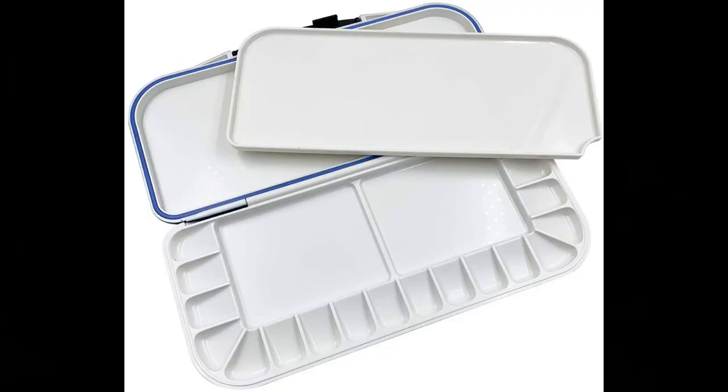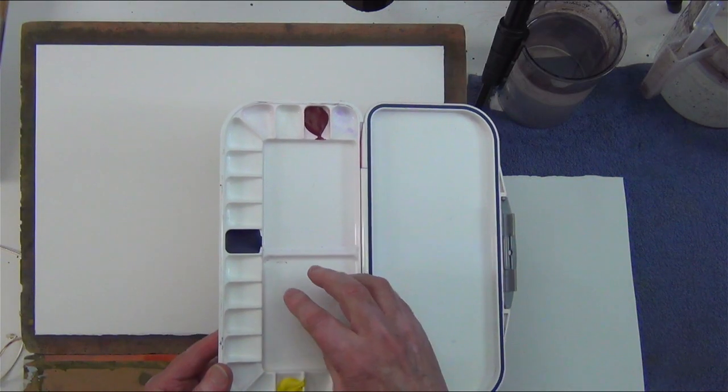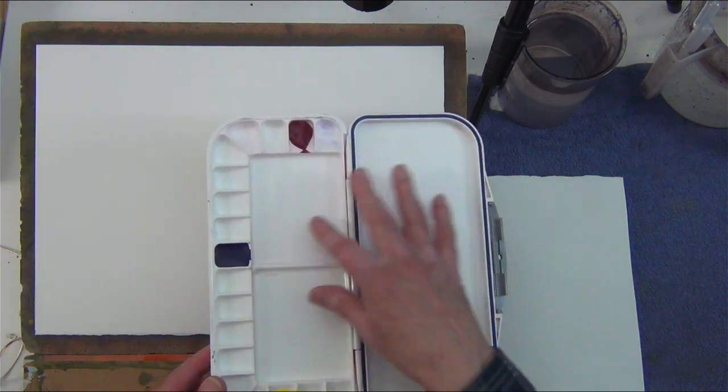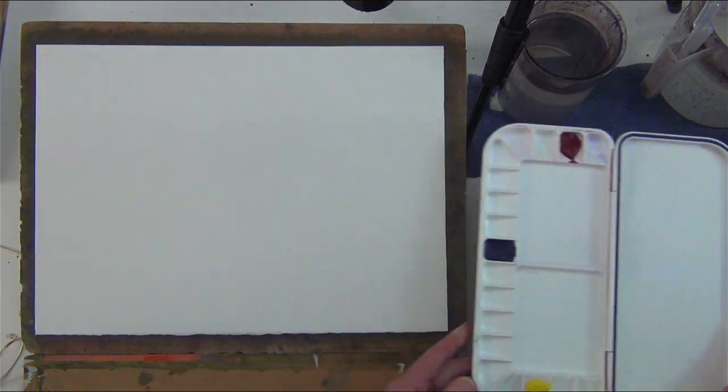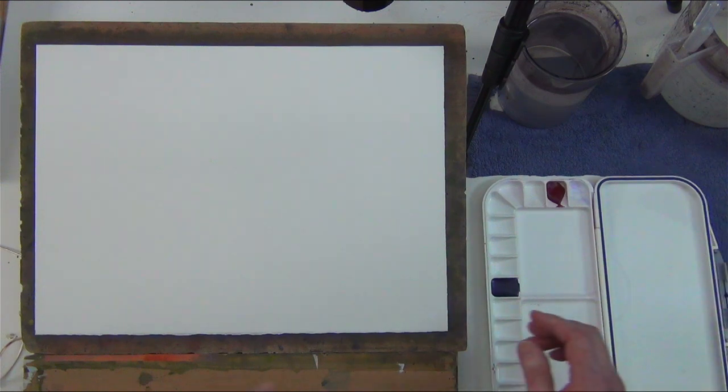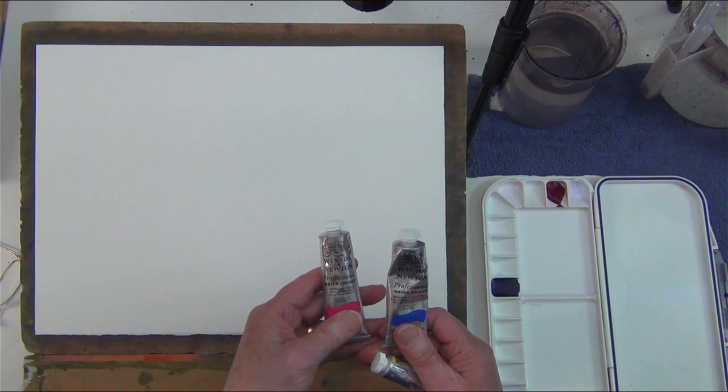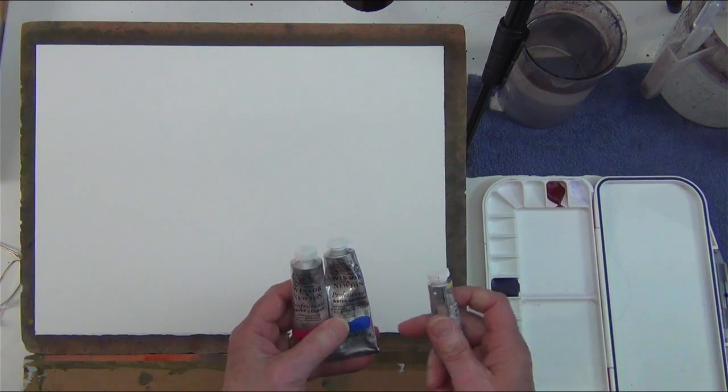So that's the palette. Palettes like this you can buy from Amazon. I prefer the ones that have at least three good size mixing areas. Now the paints we're going to be using: to keep costs down for the next ten weeks or so while we're doing this course together, I've limited it to just three tubes of paint.